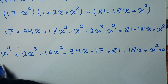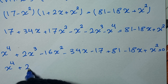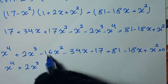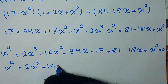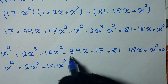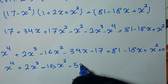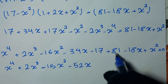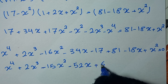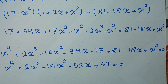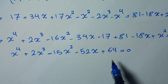So it will be x to the power of 4 plus 2x cubed, and negative 16x squared plus x squared gives negative 15x squared, and negative 34x minus 18x gives negative 52x, and positive 81 minus 17 gives positive 64, is equal to zero.